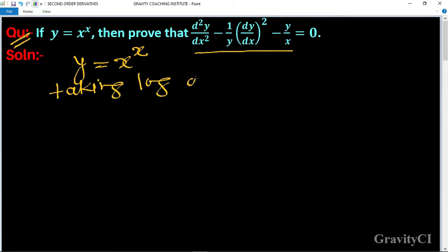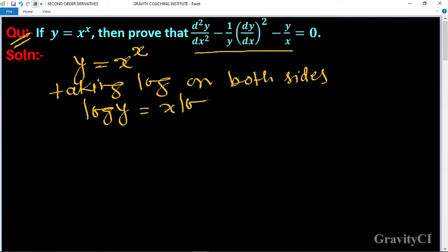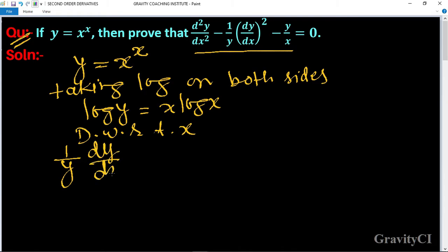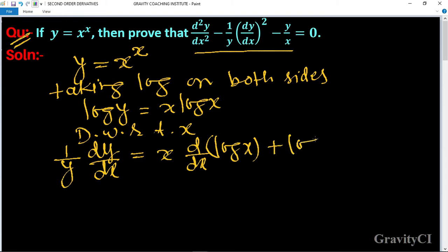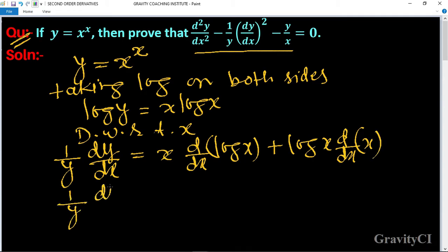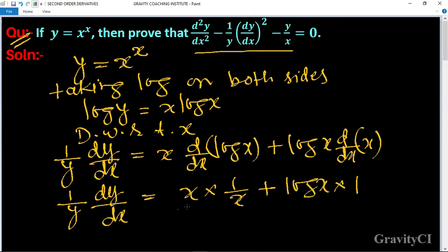First of all, we take log on both sides. So log y equals x log x. Now differentiate with respect to x: 1 upon y dy upon dx equals x into differentiation of log x, plus log x into differentiation of x. So 1 upon y dy upon dx equals x into 1 upon x, plus log x into 1.